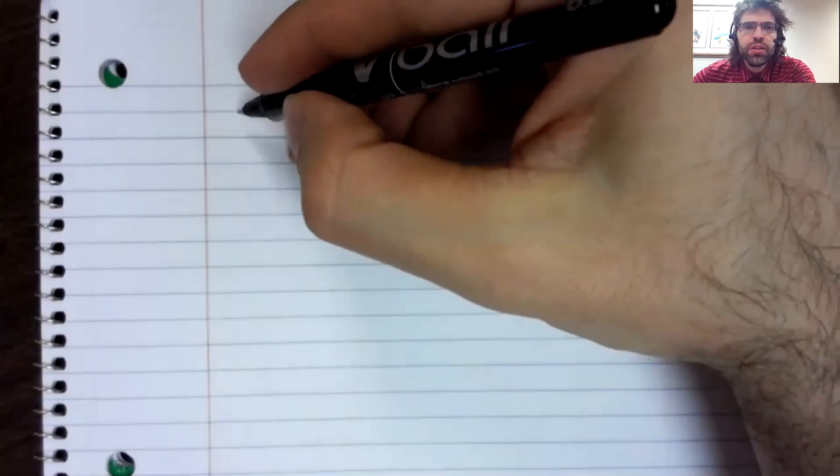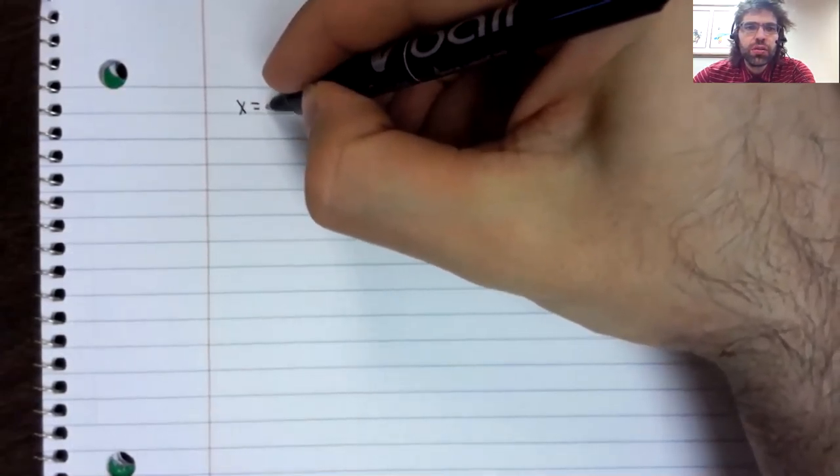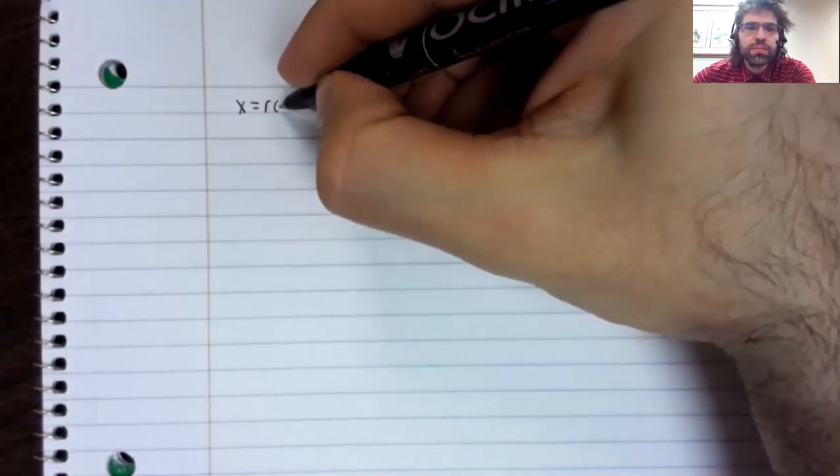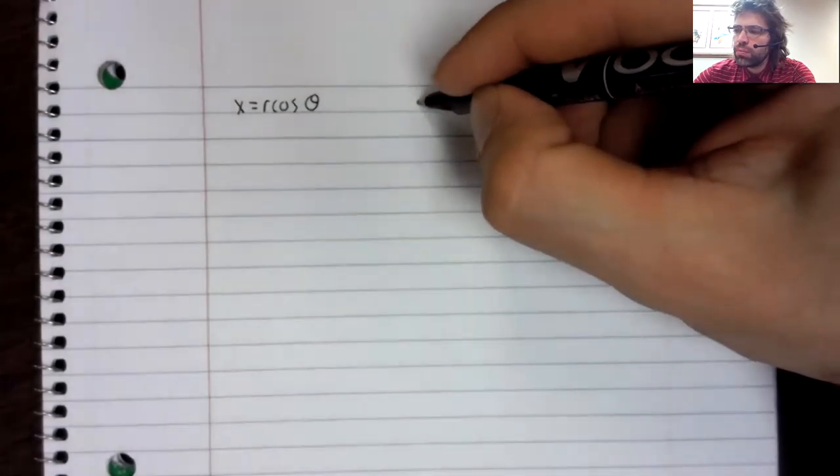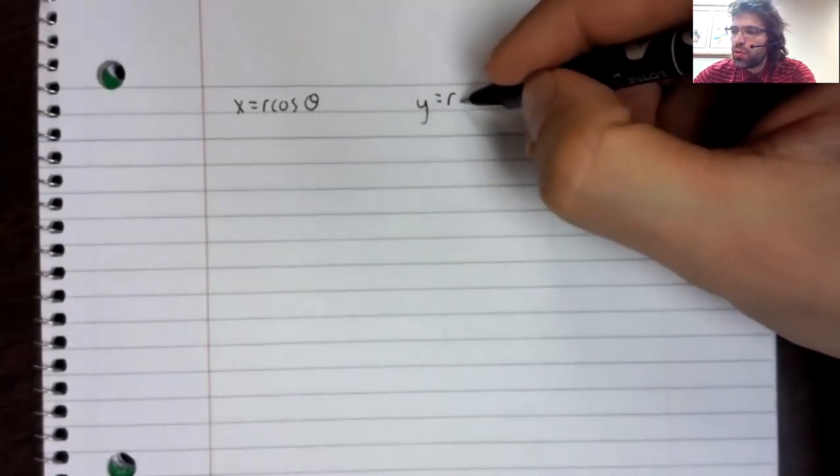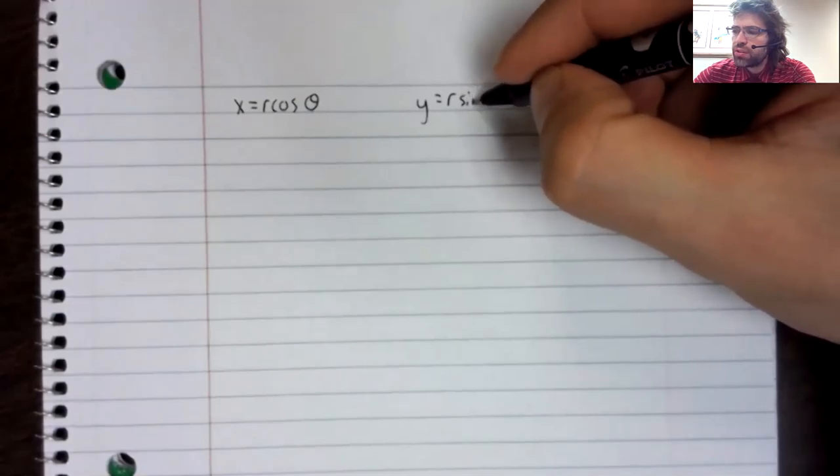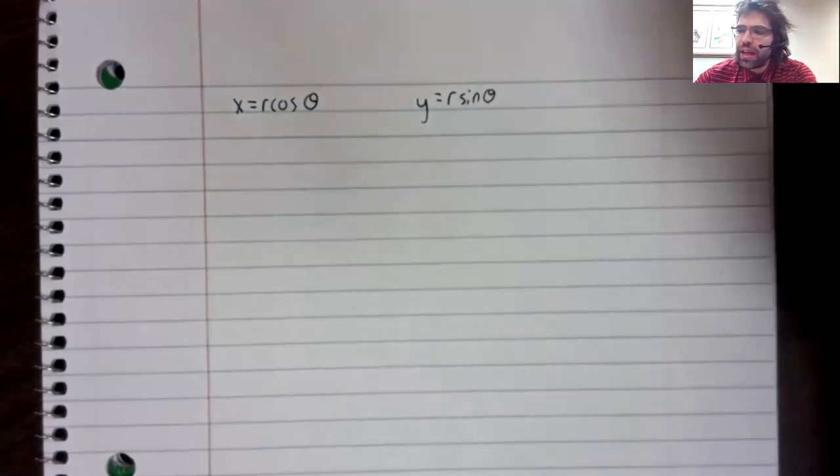The equalities you want to use here are that x equals the radius times the cosine of the angle and y equals the radius times the sine of the angle.